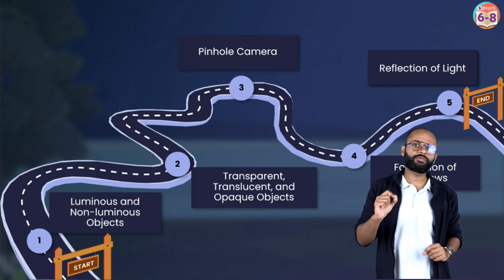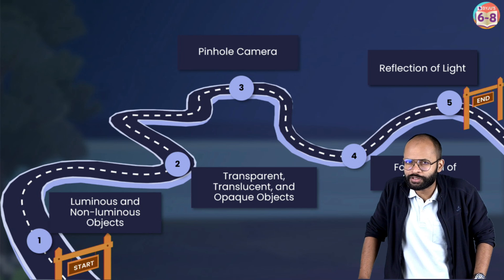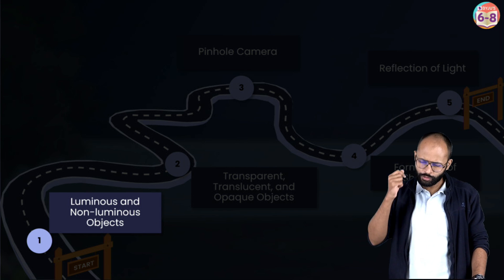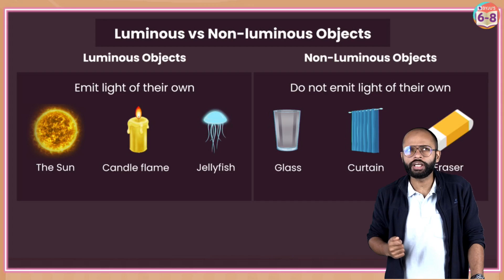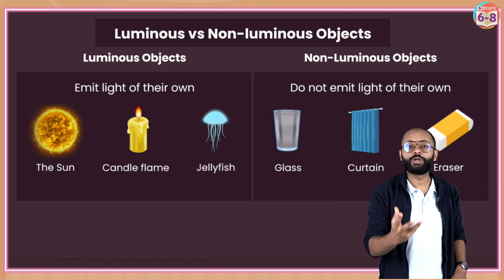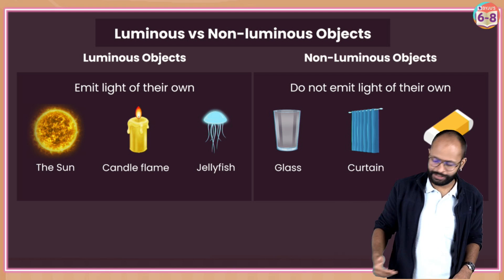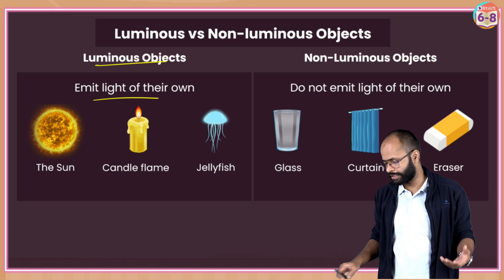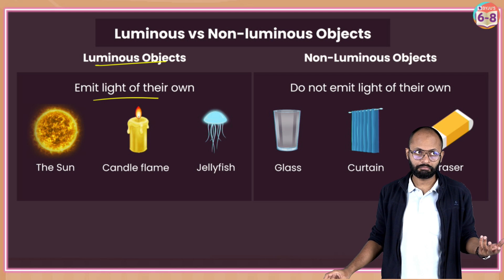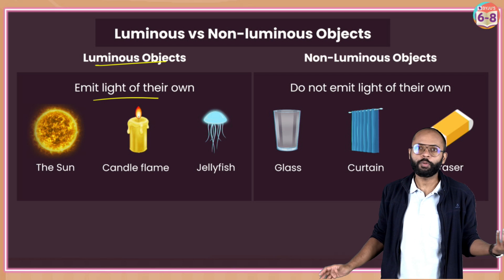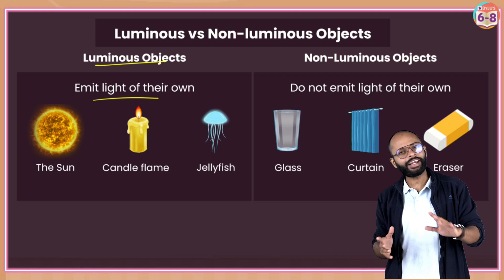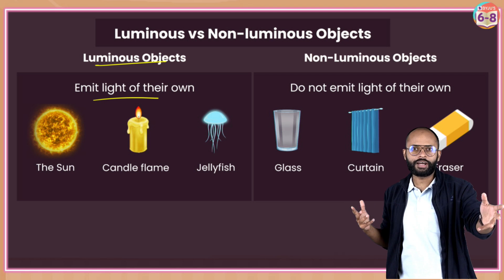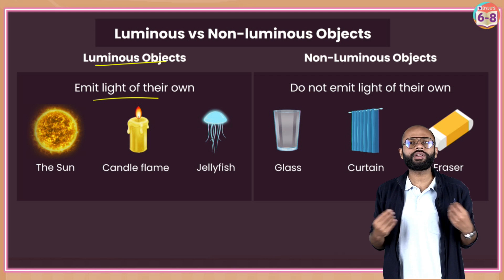Let's begin from the first milestone: luminous and non-luminous objects. If you just look at the terminology - luminous means which can glow, which can give off their own light. Those objects are called luminous objects. Luminous objects are which emit their own light - like the sun, candle, fireflies, bonfire, stars, your bulbs, tube lights at home. All of these are luminous objects; they have their own light.